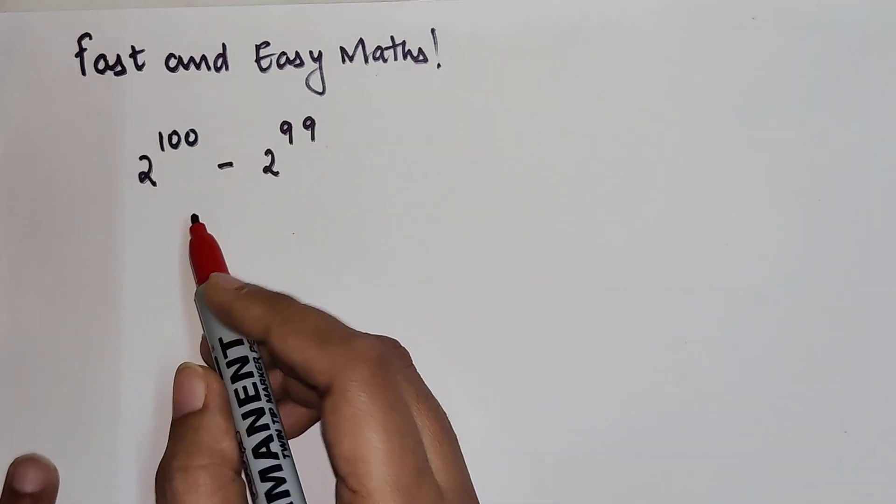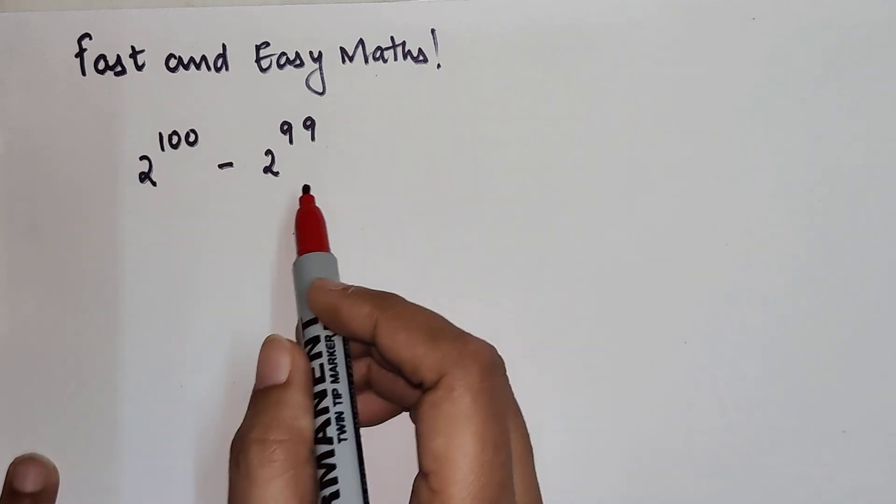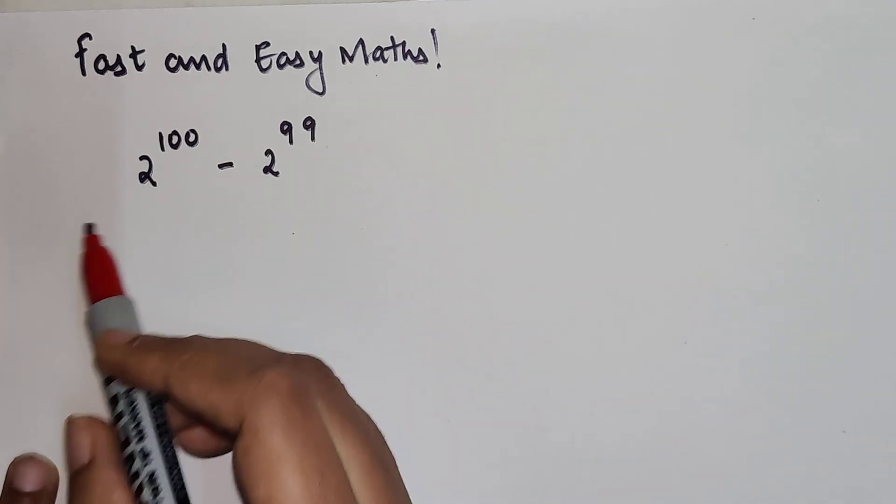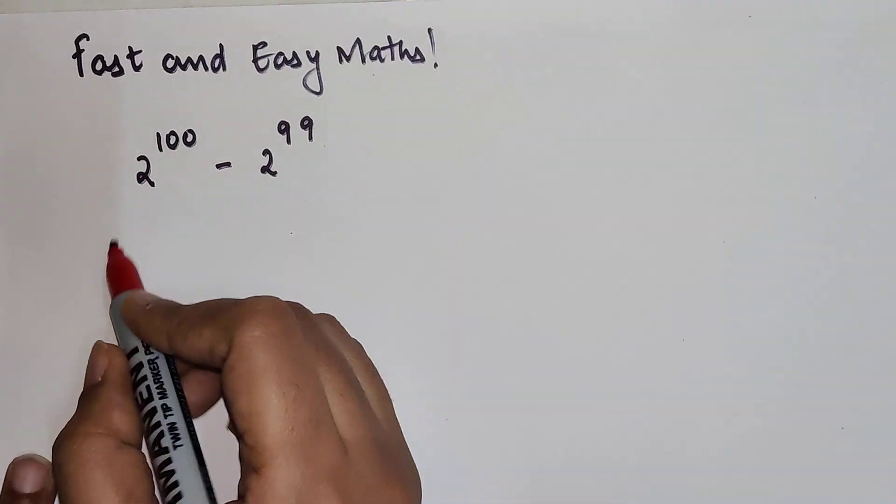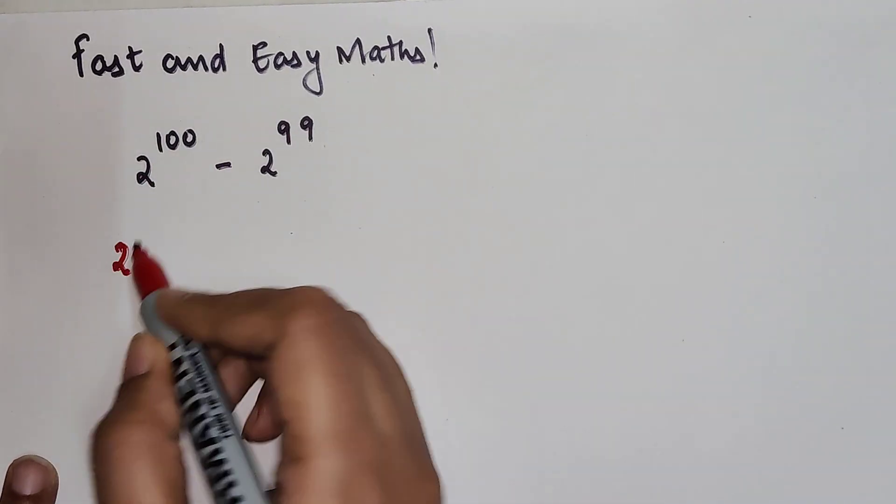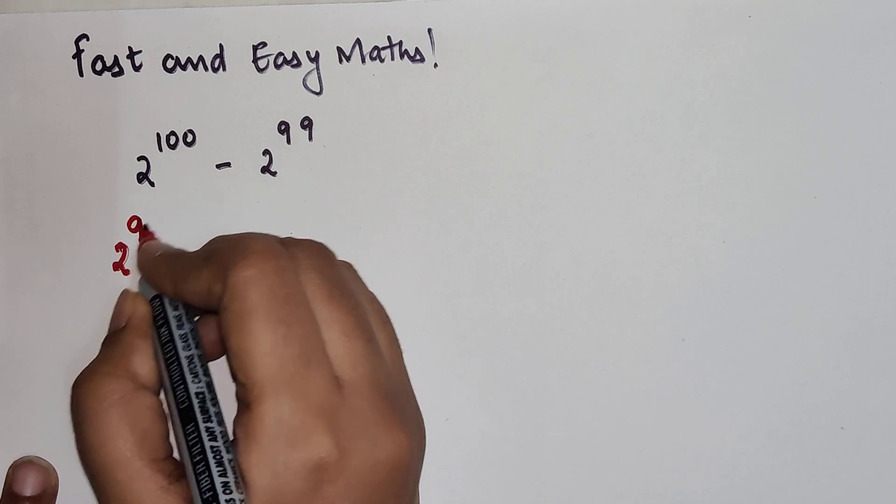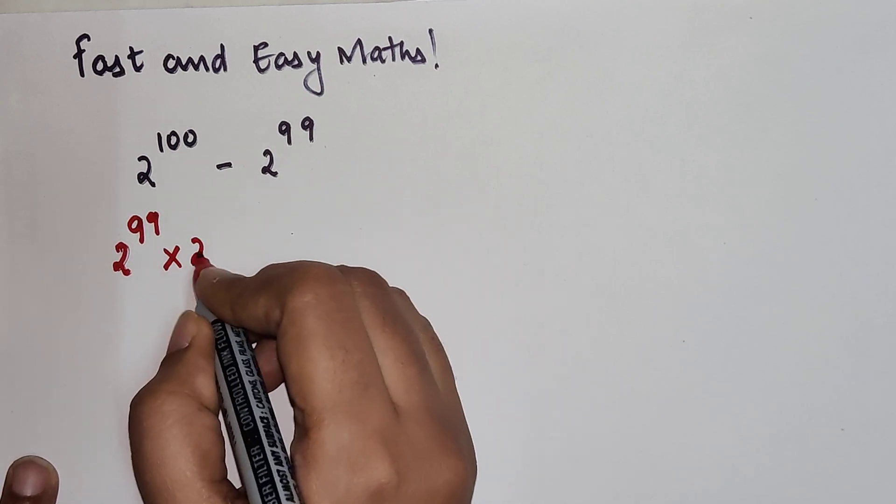Whenever you come across something like this, let's try and put all the entities in the same index. Here 2 raised to 100 can be written as 2 raised to 99 into 2 raised to 1.